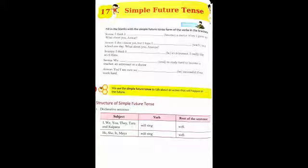In Simple Future Tense, the sentence is composed of two parts: 'will' or 'shall' plus the infinitive without 'to'. Simple Future Tense is used in a declaratory sentence.